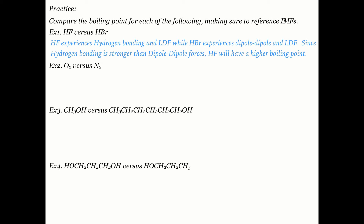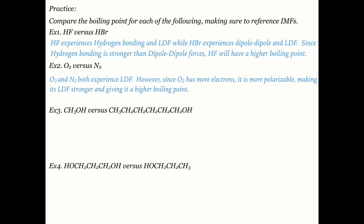Comparing O2 versus N2: both only experience London dispersion forces. When two molecules share the same type of intermolecular attraction, compare their number of electrons. O2 has more electrons than N2, making it more polarizable — its electrons can line up more readily to create a bigger temporary dipole. Therefore O2 has stronger LDF and a higher boiling point. Key buzzwords: more electrons → more polarizable → stronger LDF.